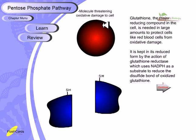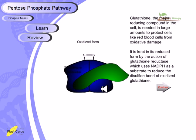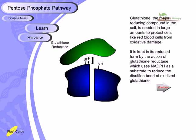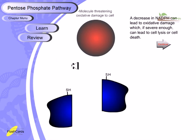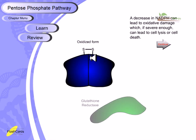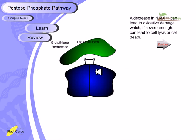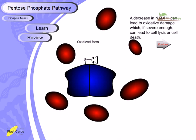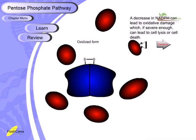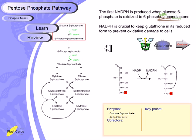Glutathione reductase acts along with NADPH to break apart the oxidized glutathione and produce free SH bonds. A decrease in NADPH can lead to oxidative damage, a severe condition that can lead to cell lysis. If the cell cannot keep glutathione in its reduced form, the ultimate result is cell death. That is why generating NADPH is very important — we need glutathione reductase and NADPH to keep glutathione reduced.